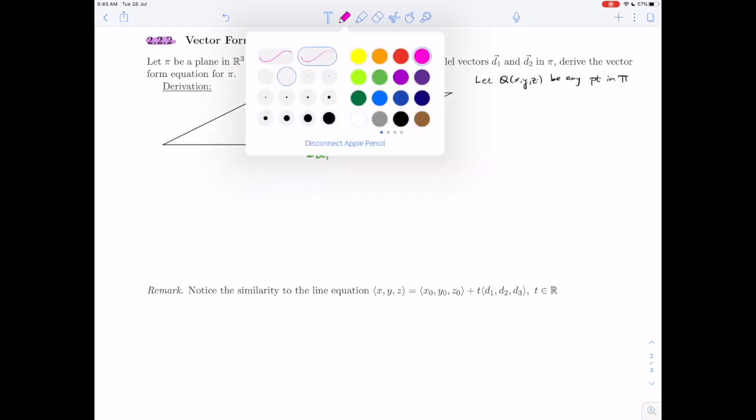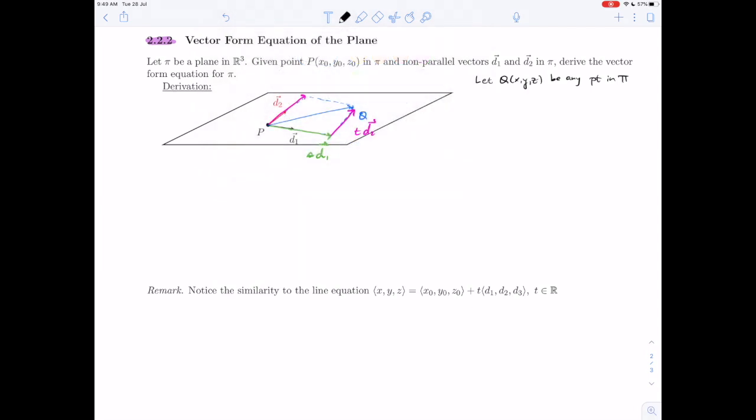Using our tip-to-tail relationship, we can see that our vector pq in the plane can be expressed as some multiple of d1 plus some multiple of d2, where s and t are the appropriate multiples given where q ends up being placed.